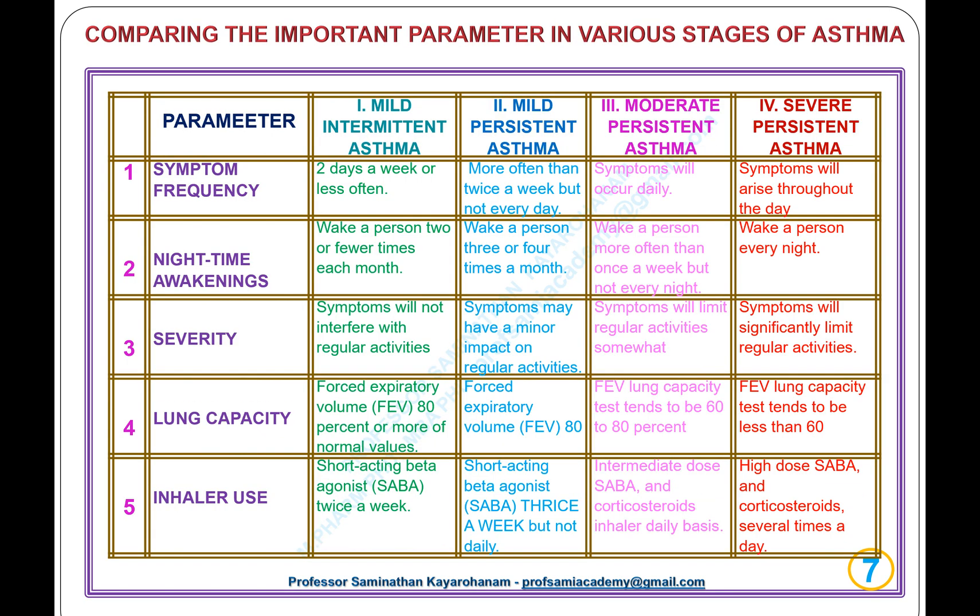Comparing important parameters across the four stages of asthma — the five parameters are: symptom frequency, nighttime awakenings, severity, lung capacity, and inhaler use. Stage 1, mild intermittent asthma: symptoms occur 2 days a week or less; nighttime awakenings 2 or fewer times per month; symptoms do not interfere with regular activities; forced expiratory volume (FEV) at 80% or more of normal; short-acting beta agonist (SABA) use twice a week.